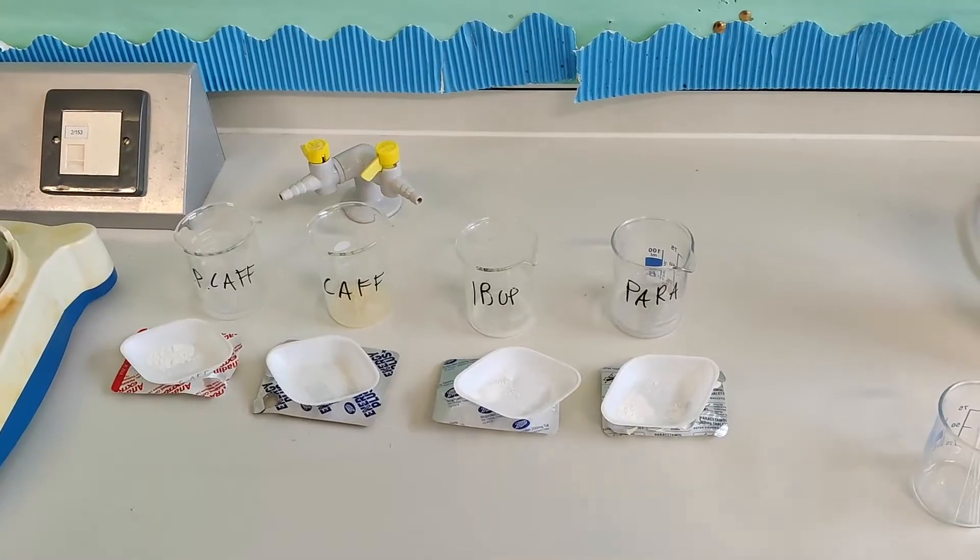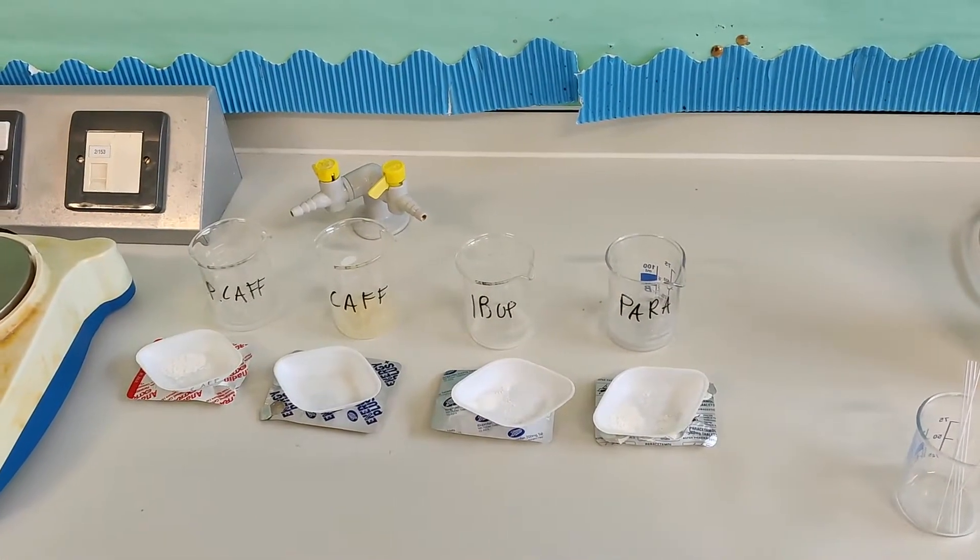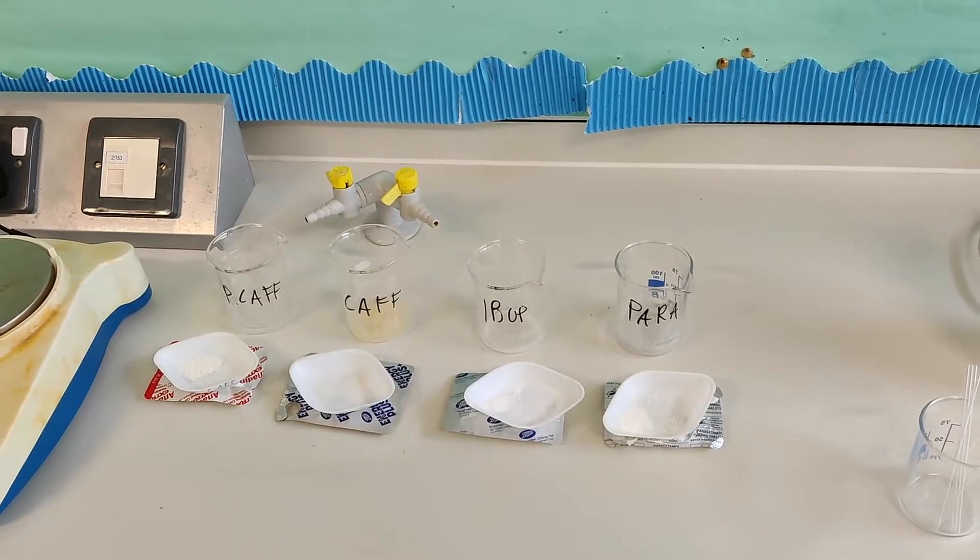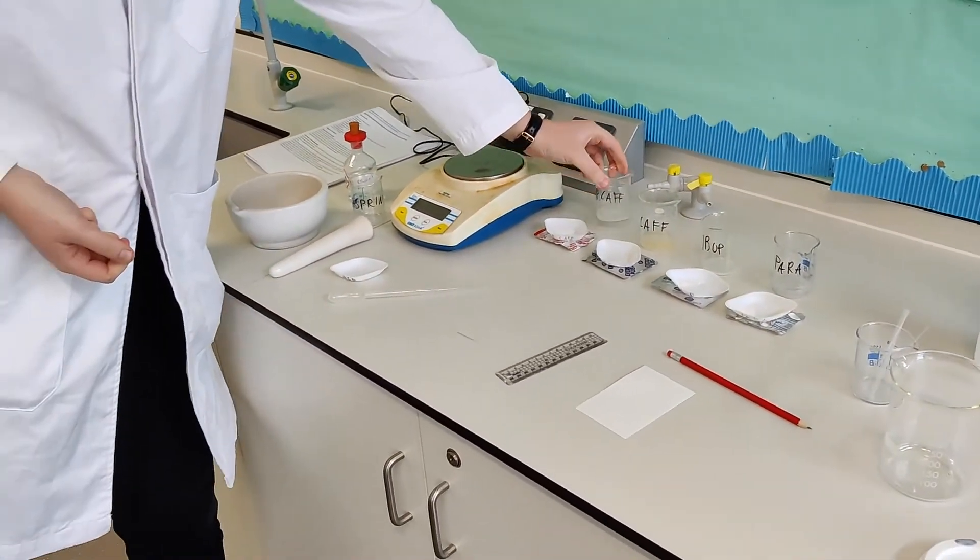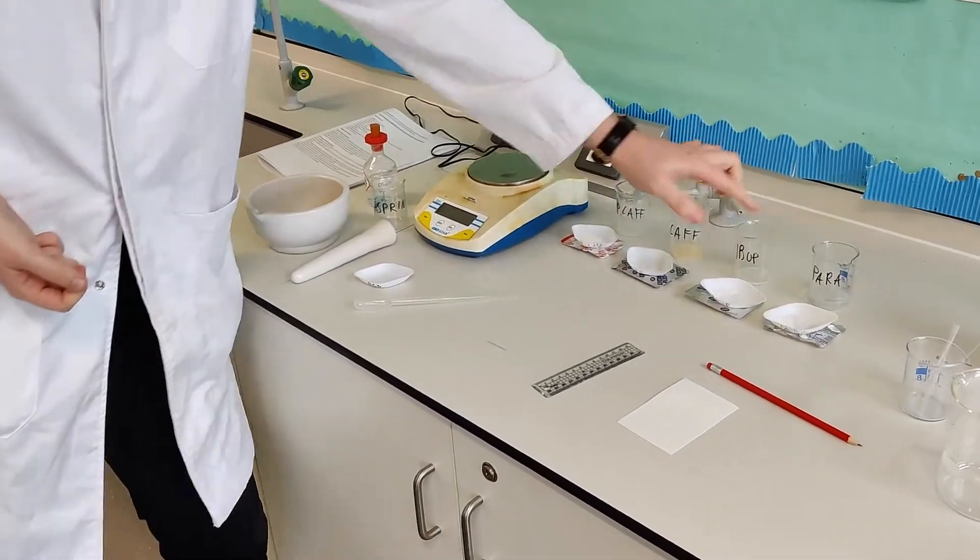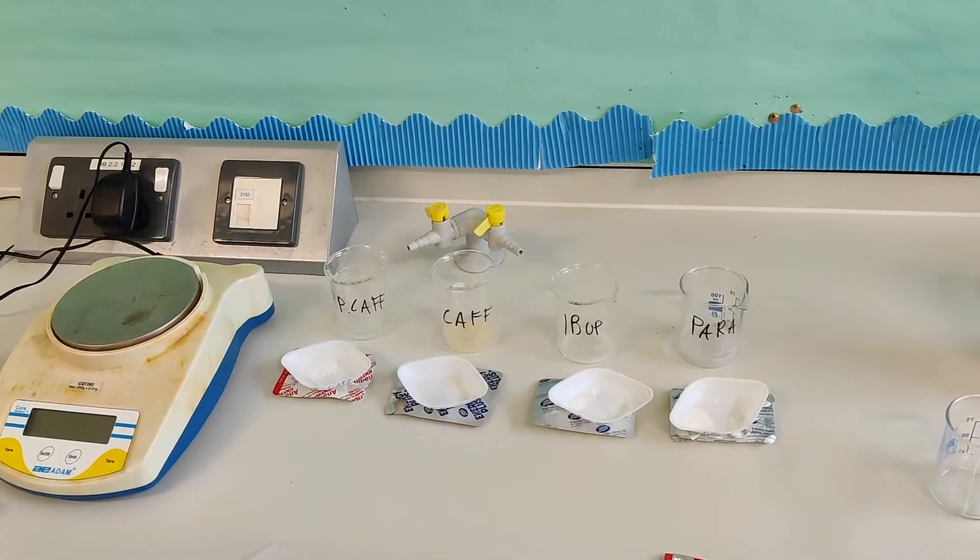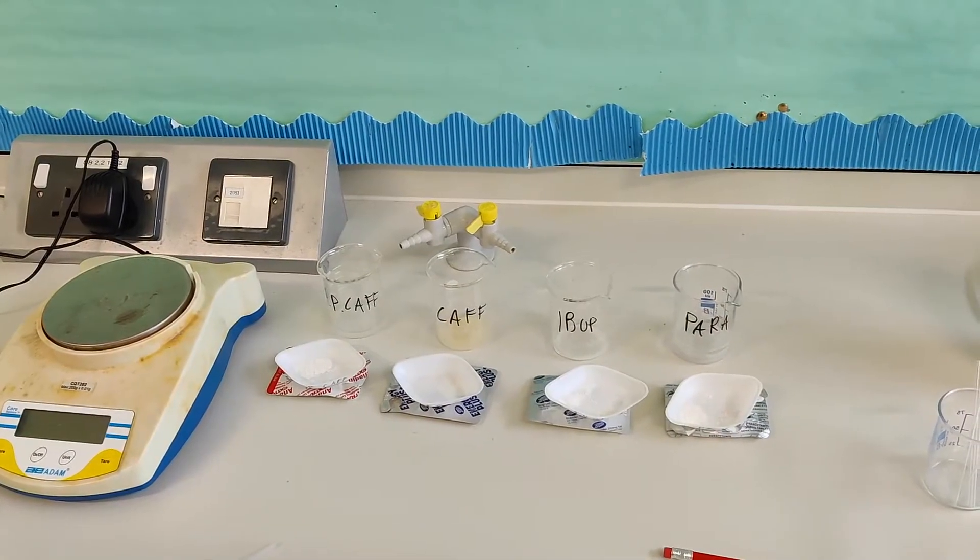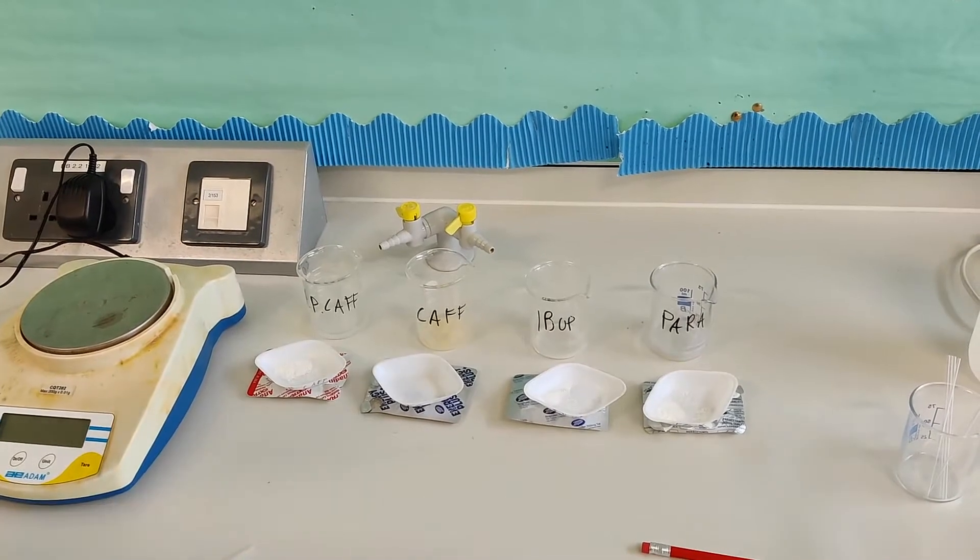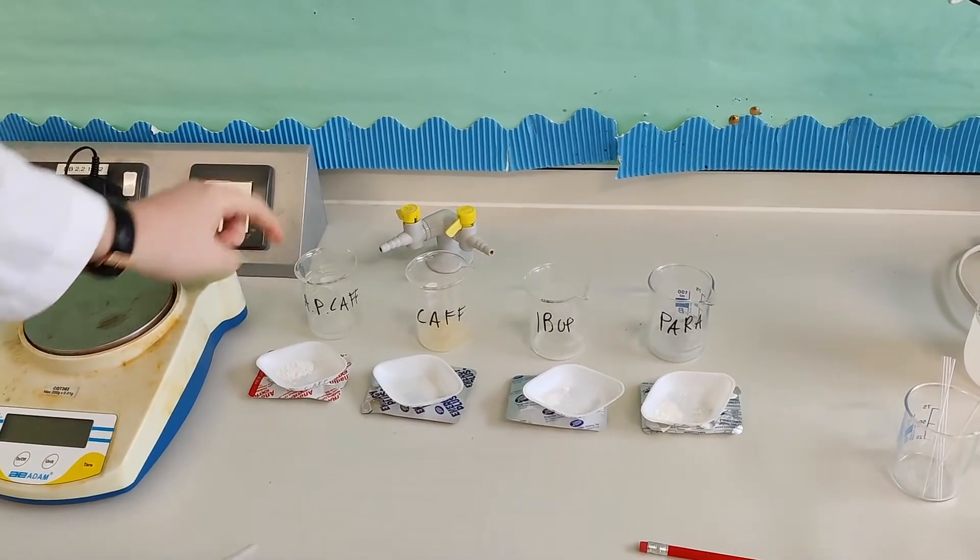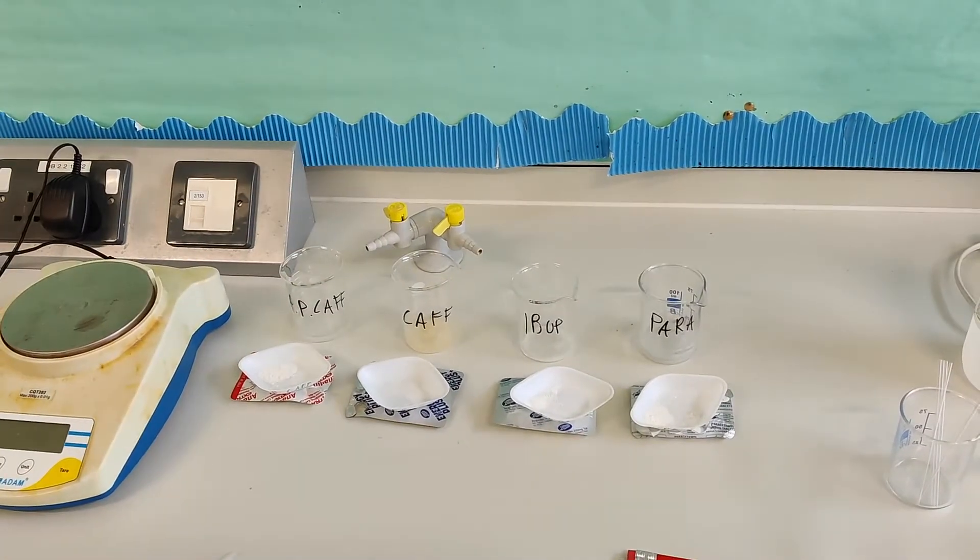And we put 0.1 grams of this fine powder and dissolve it into 0.5 cm³ of ethanol, which you can see here. Now, very important, I've labelled each of these beakers to make sure I know which drug is in which beaker. So for example, para just means paracetamol, ibup just means ibuprofen, then we've got caffeine, and then here we've got a mixture of aspirin, paracetamol, and caffeine.